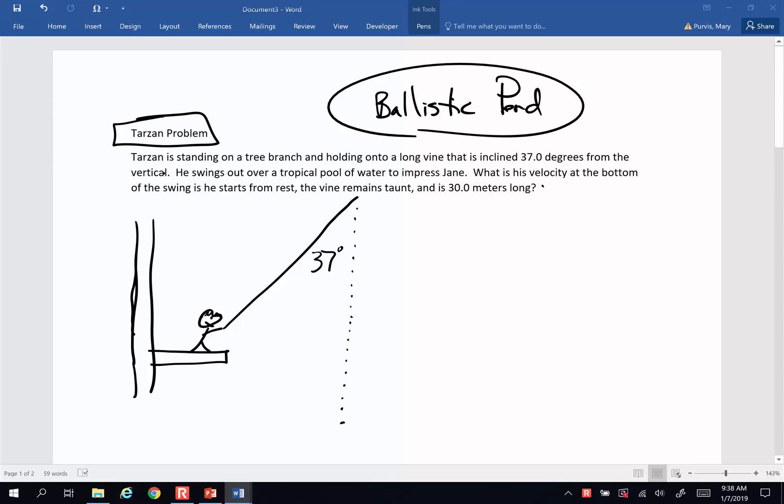So here goes. Tarzan is standing on a tree branch and holding onto a long vine that is inclined 37 degrees from the vertical. He swings out over a tropical pool of water to impress Jane. What is his velocity at the bottom of the swing if he starts from rest, the vine remains taut, and the vine is 30 meters long?